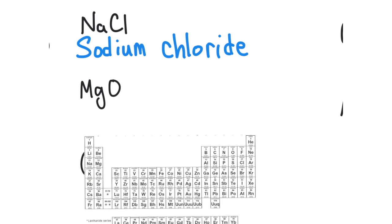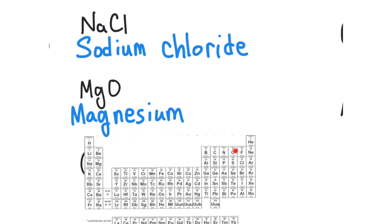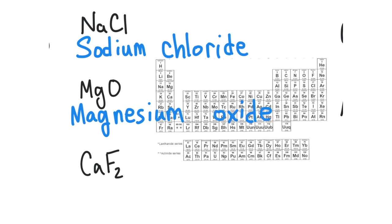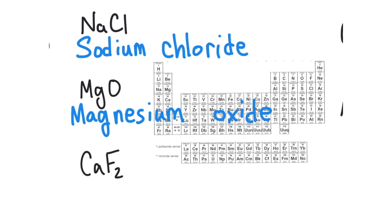Next we have MgO. Mg is magnesium, so we write magnesium as the cation. Oxygen becomes oxide. So the name is magnesium oxide. Then we have CaF₂ — Ca is calcium, and fluorine becomes fluoride, giving us calcium fluoride.